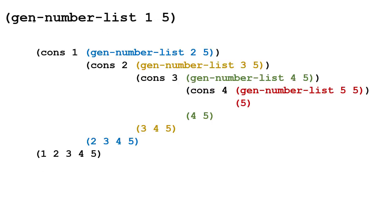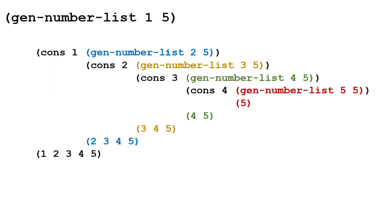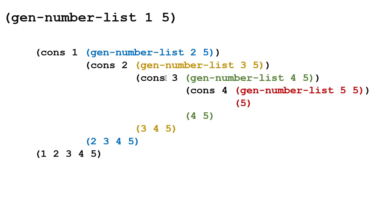Here's an example trace: if we call gen-number-list from 1 to 5, we cons 1 onto the result of gen-number-list of 2 and 5. To get gen-number-list of 2 and 5, we cons 2 onto gen-number-list of 3 and 5, which cons 3 onto gen-number-list of 4 and 5.